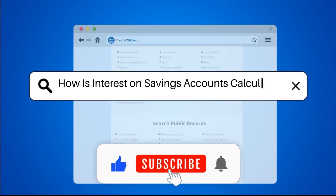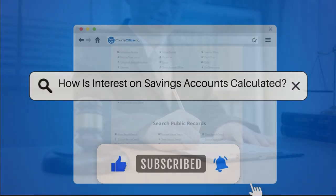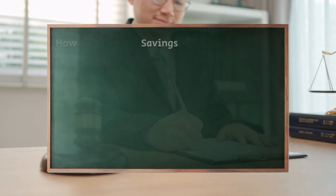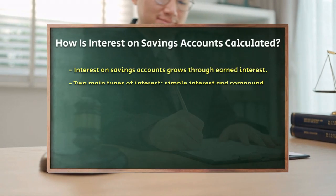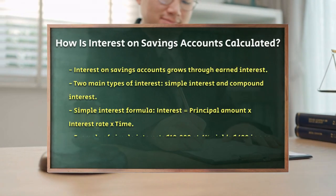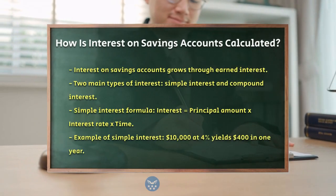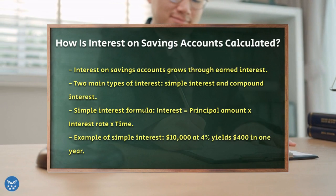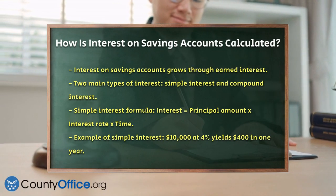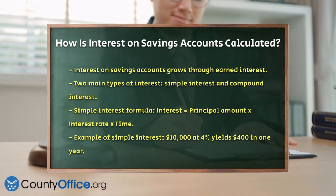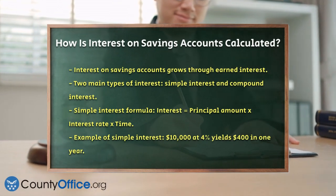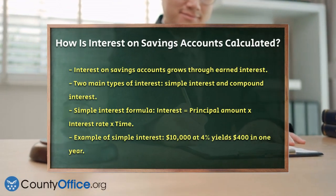How is interest on savings accounts calculated? Have you ever wondered how your savings account grows over time? It's all about the interest you earn, and there are two main ways this interest is calculated: simple interest and compound interest.